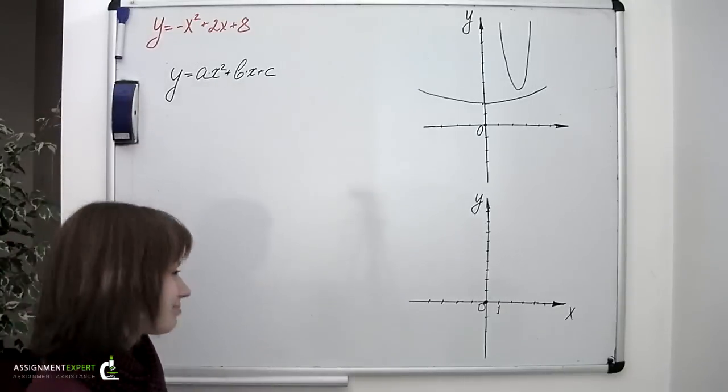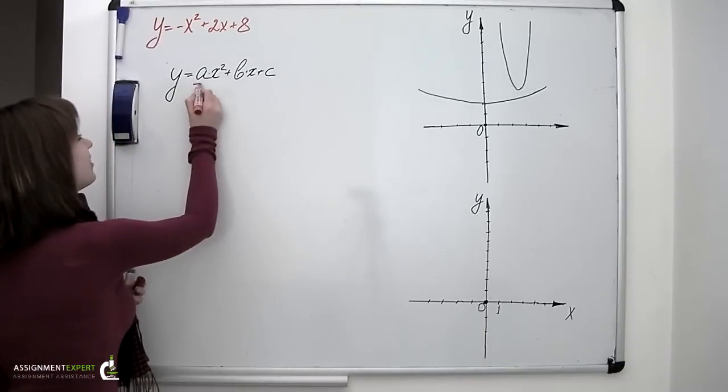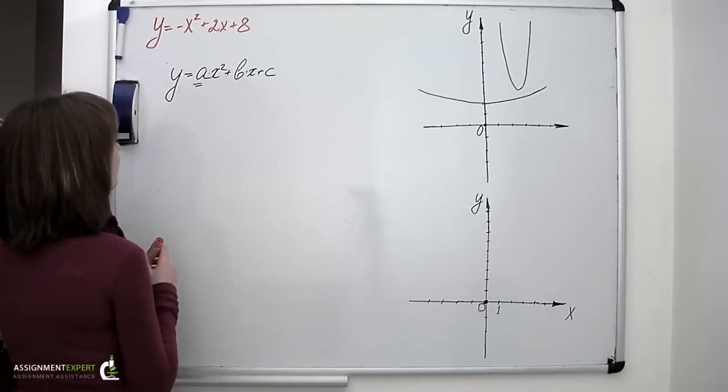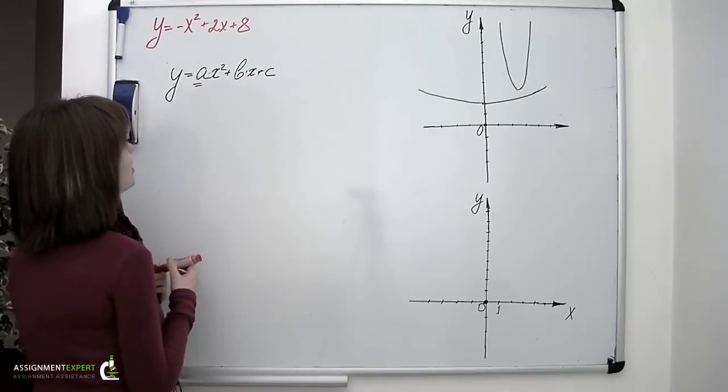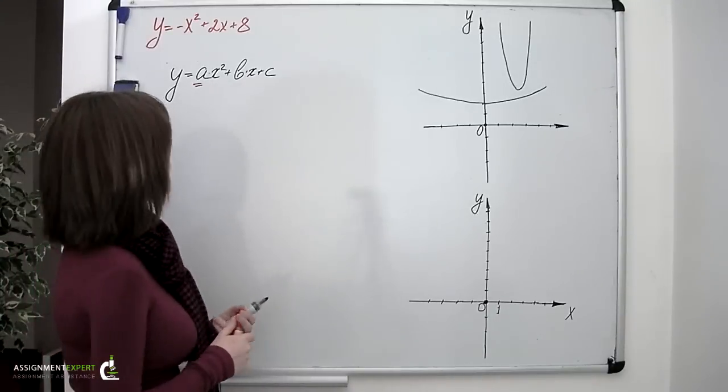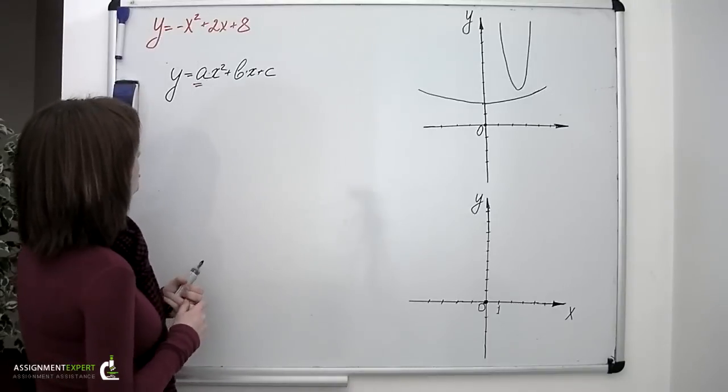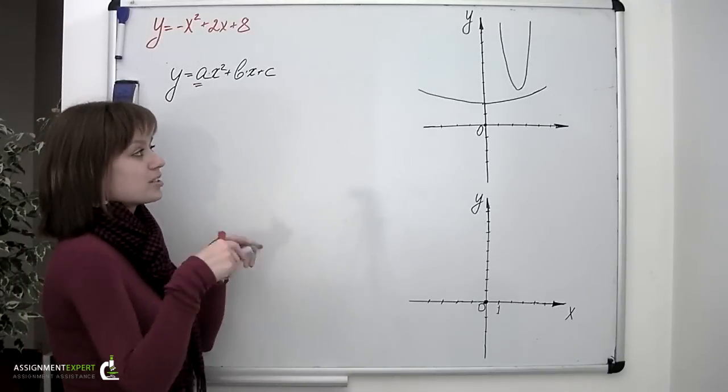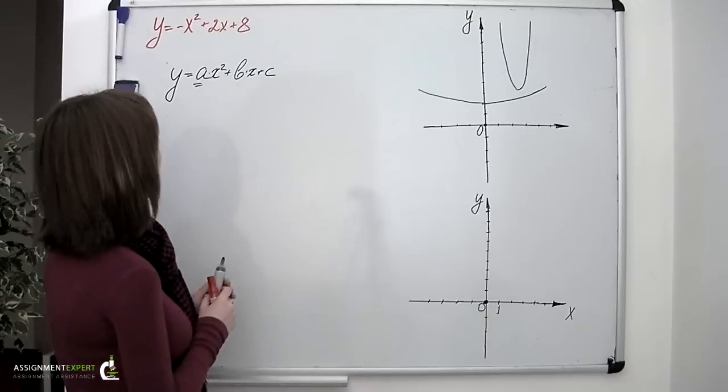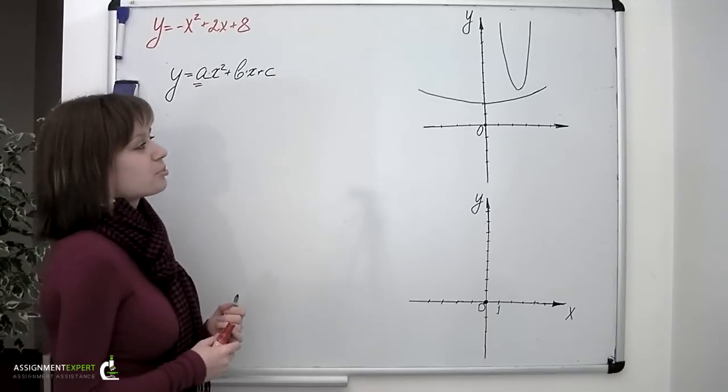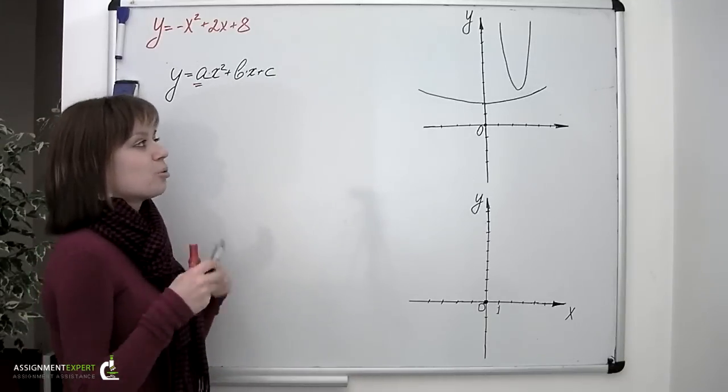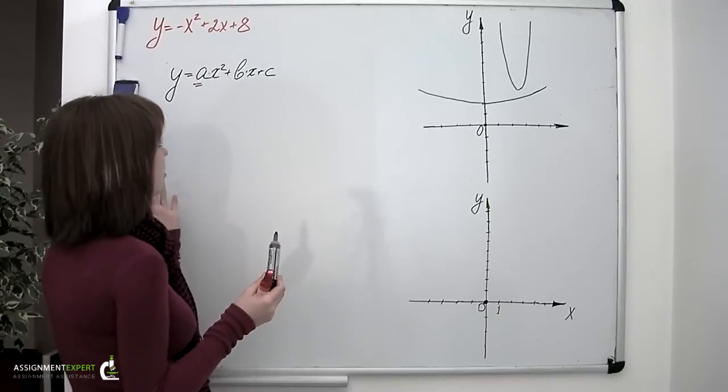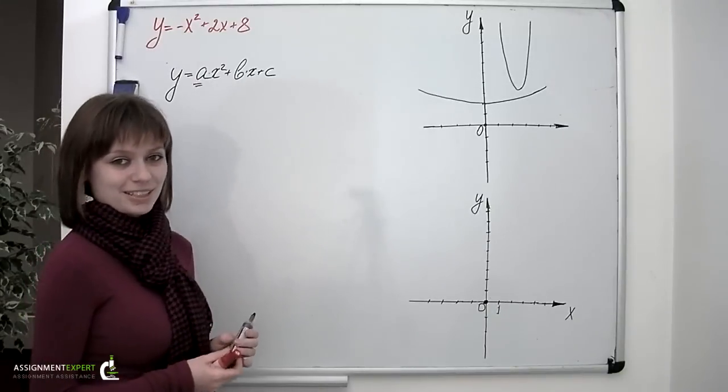Let's find out how exactly the shape of the parabola depends on these coefficients. First there's a, a coefficient standing next to the squared x. This parameter defines whether the branches of the parabola are opened up or down. So if a is a positive number, the branches of the parabola open up. And if it's negative, the branches of the parabola are directed downwards.